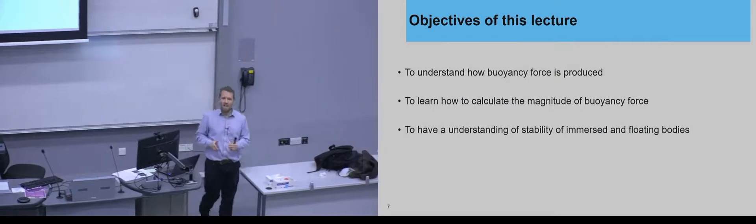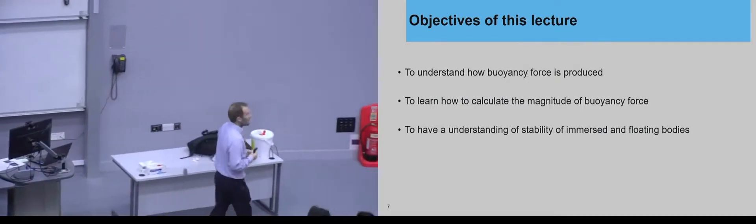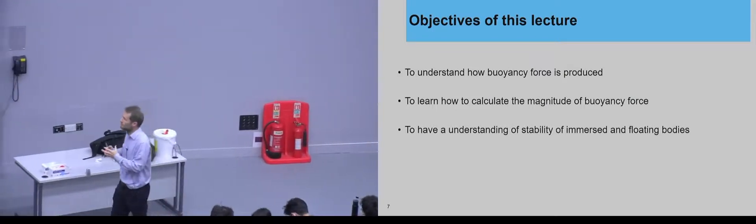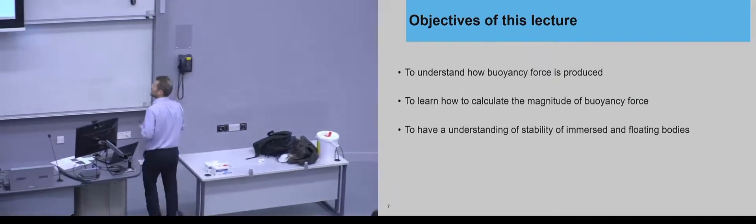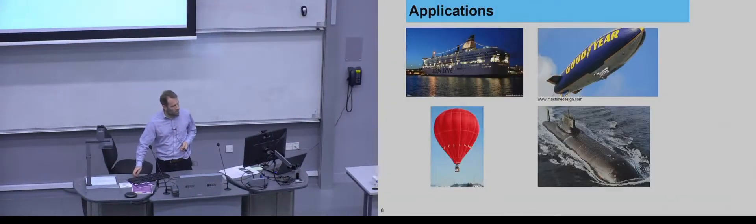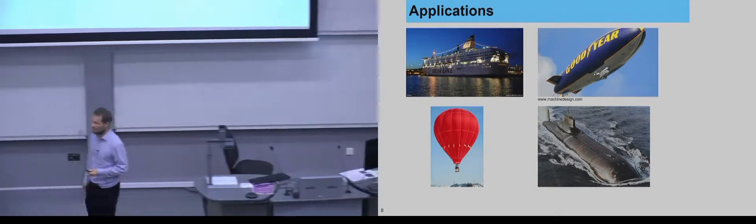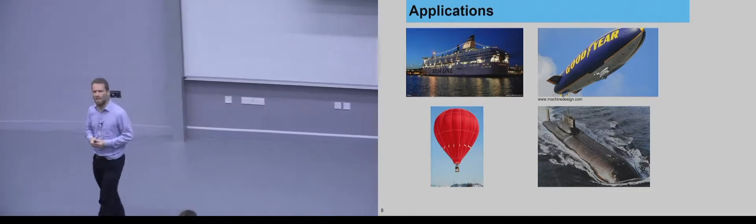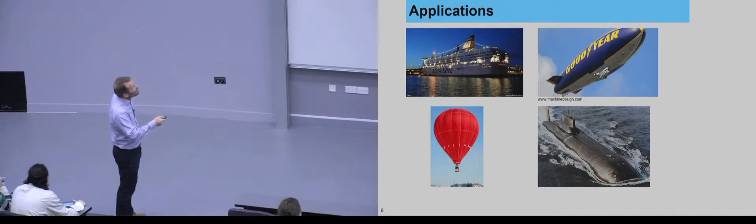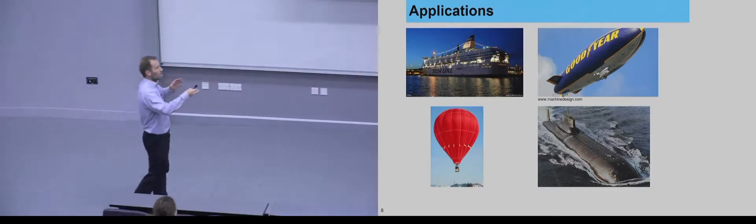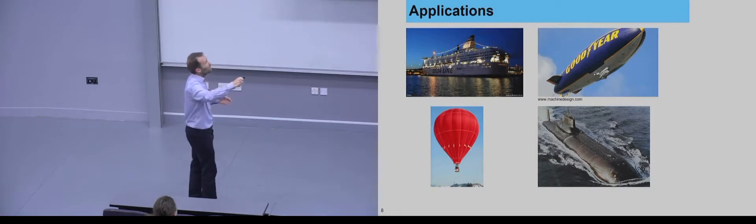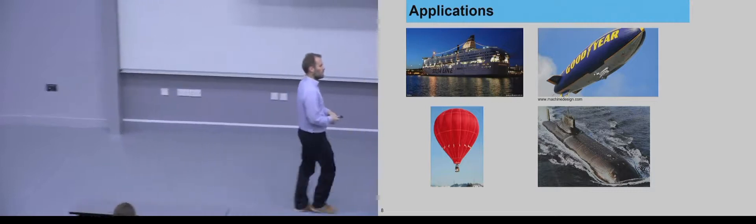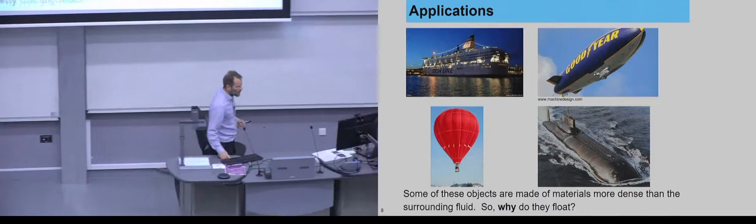The objectives of this lecture are to understand how buoyancy is produced, to understand how to calculate the magnitude of that buoyancy force, and to have an understanding of stability and the forces on floating objects. The applications of buoyancy include a ship — actually a cruise liner — an airship or blimp, a balloon, and a submarine. The airship and balloon float in air, while the ship and submarine float in water. Why does something made of heavy metal float?